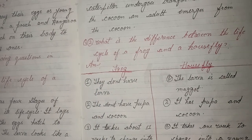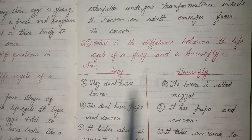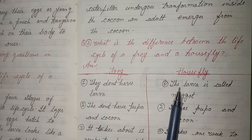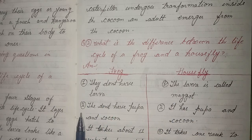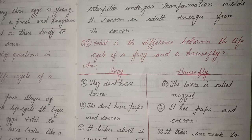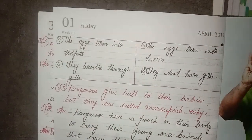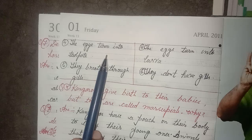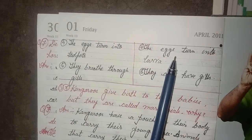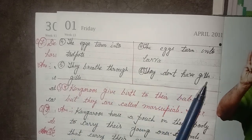The caterpillar undergoes transformation inside the cocoon and an adult emerges from the cocoon. Two, what is the difference between the life cycle of a frog and a housefly? Frog: They don't have larva. Second, they don't have pupa and cocoon. Third, it takes about 11 weeks to change into a young frog. Fourth, the eggs turn into tadpole. Fifth, they breathe through gills. Housefly: The larva is called maggot. Second, it has pupa and cocoon. Third, it takes one week to change into a young one. Fourth, the eggs turn into larva. Fifth, they don't have gills.